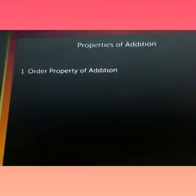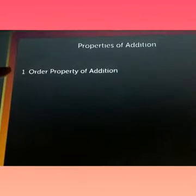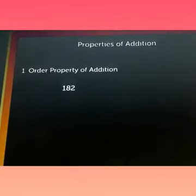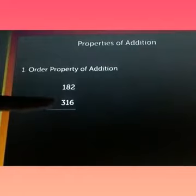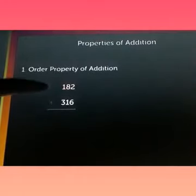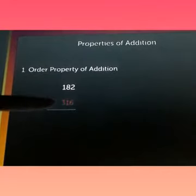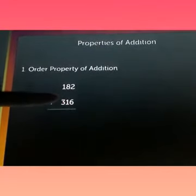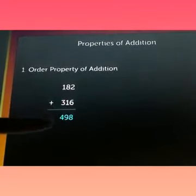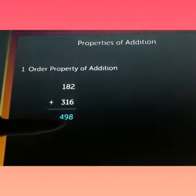Order property of addition is also known as commutative property. Taking an example: 182 and 316. These are the two addends. After adding these two addends, as you can see, the sum we got is 498.